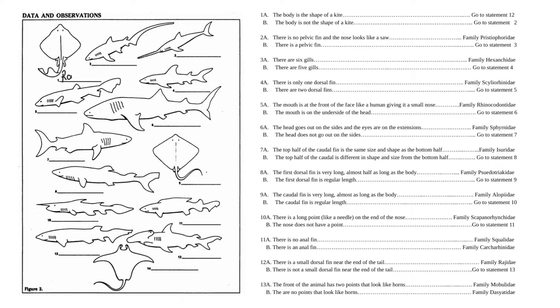So you would then write Rajaday for shark number 1. Let's look at shark number 2 as well. So once again, here's shark 2. Start with statement 1a. The body is the shape of a kite. It is not, so we will go to statement 2. There is no pelvic fin, and the nose looks like a saw. There is a pelvic fin. The nose does not look like a saw, so we go to statement 3.